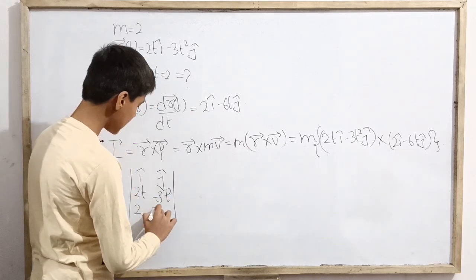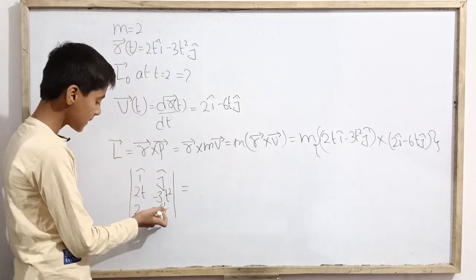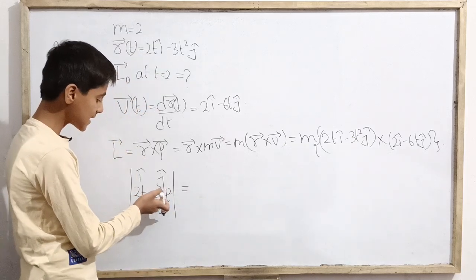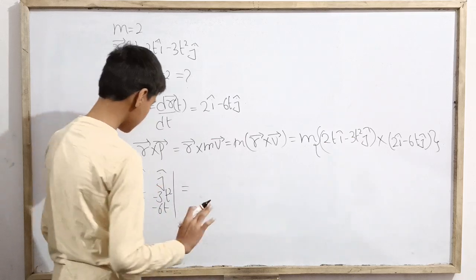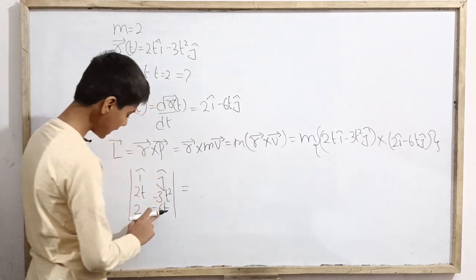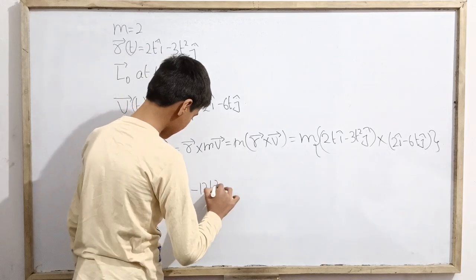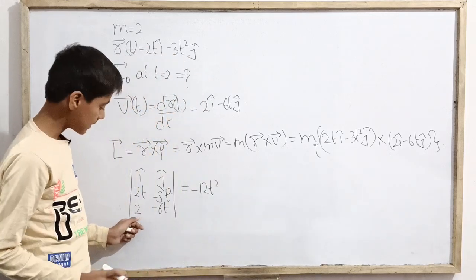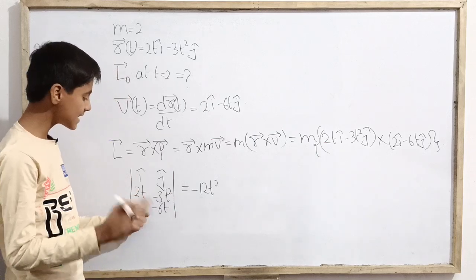Then 2 and minus 6t. This becomes this into this minus this into this. We get 2t into minus 6t, which is minus 12t square. Then plus, but minus 3t square into 2, that is minus 6t square.